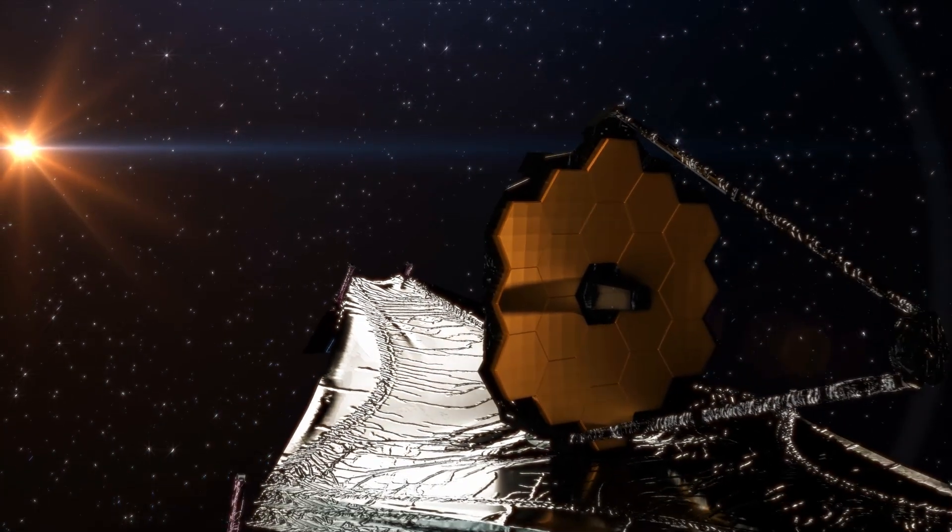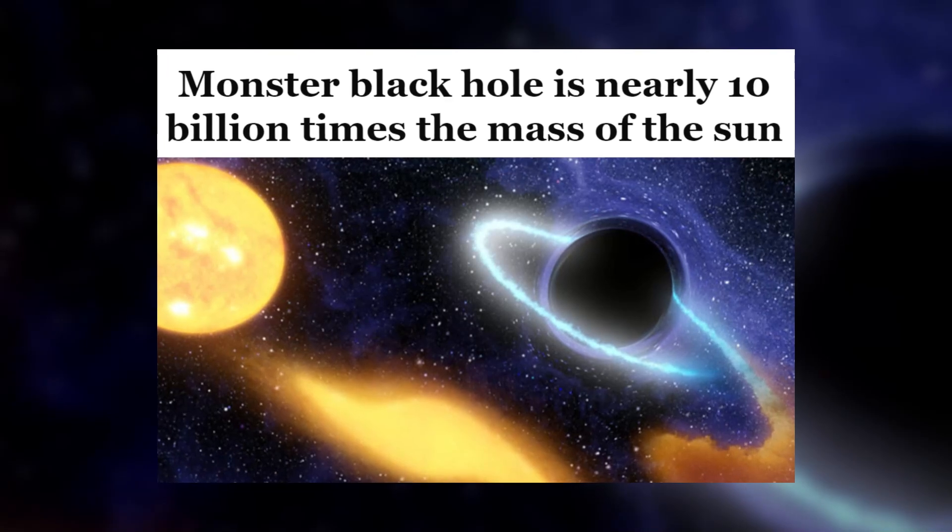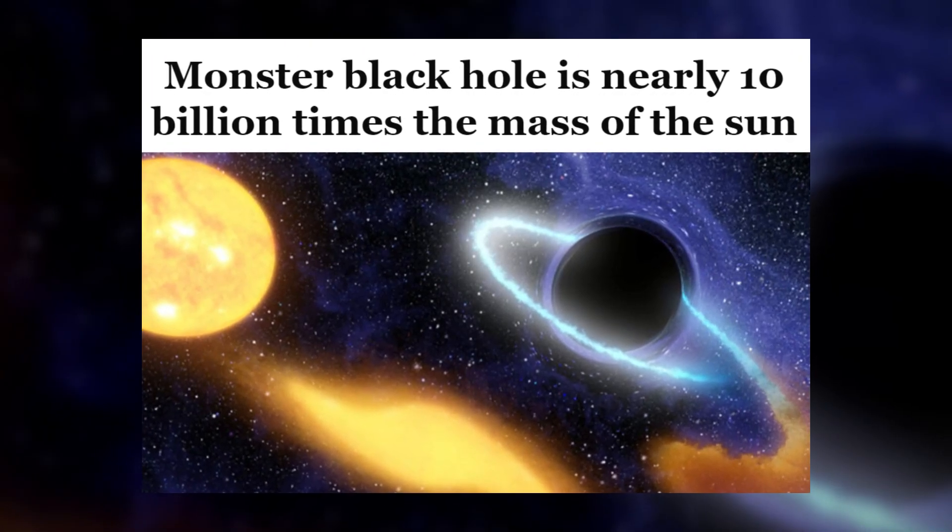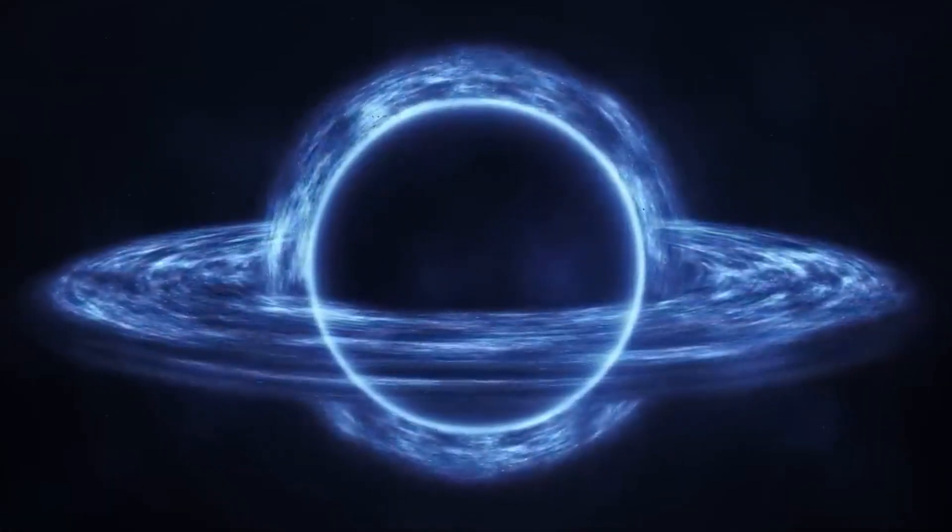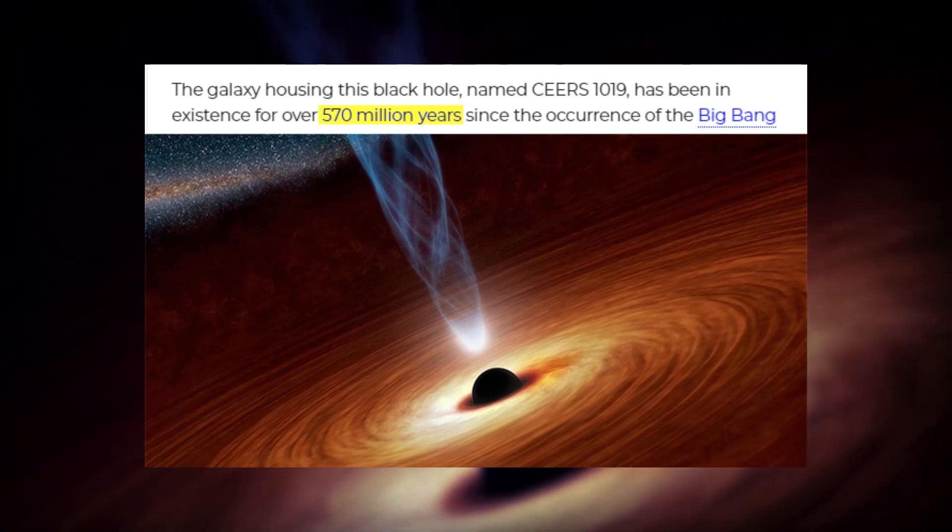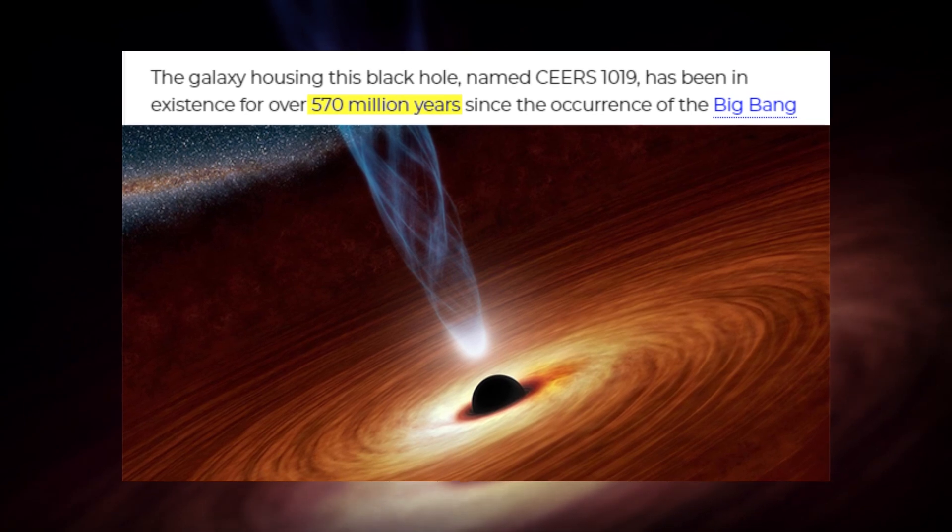Observations collected through the James Webb Space Telescope have revealed an active supermassive black hole 10 million times the mass of the sun, an ancient and distant black hole that was born when the universe was barely 570 million years old.